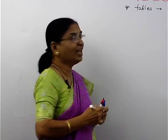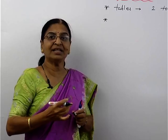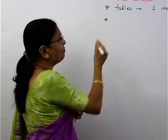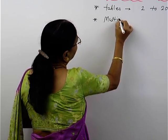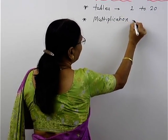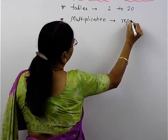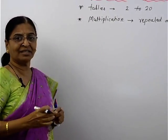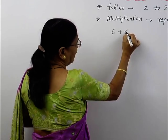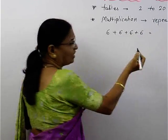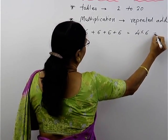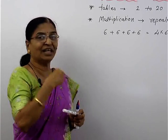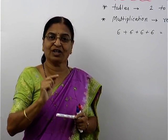Now we will go for the multiplication. The second part is multiplication, which is again counting the tables only. When I say multiplication, what does it mean? Multiplication is actually known as repeated addition. Why is it called repeated addition? Because once I know a number and I am adding it repeatedly, suppose 4 times, then in short, that is 4 multiplied by 6 and the answer will be 24. So the meaning of multiplication is the repeated addition of the same digit or number.